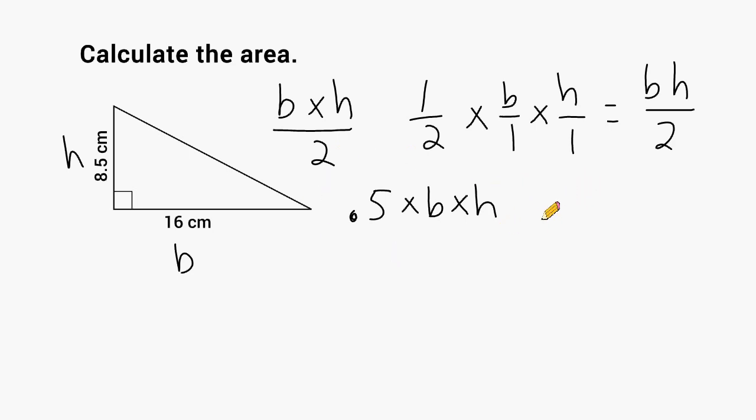Let's rewrite this equation here as 0.5 multiplied by the base of the triangle, which is 16, multiplied by the height of the triangle, which is 8.5.